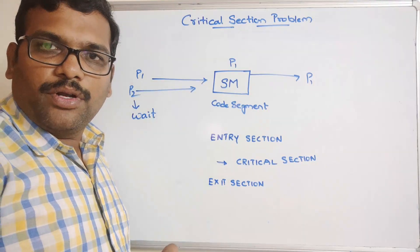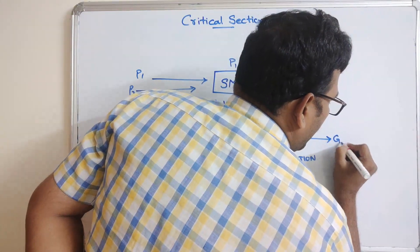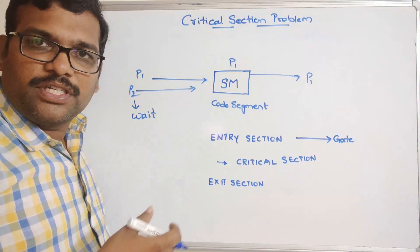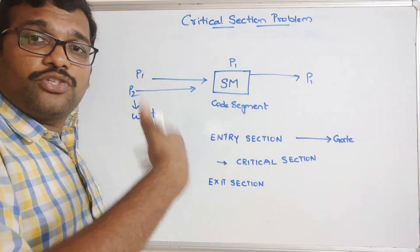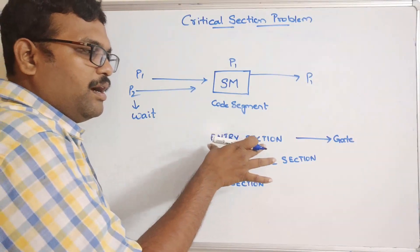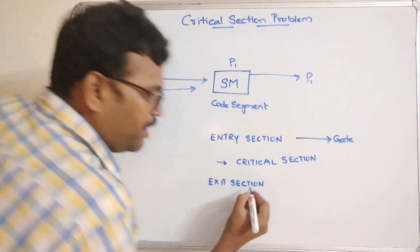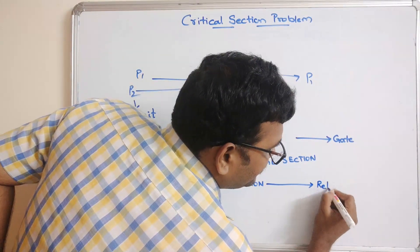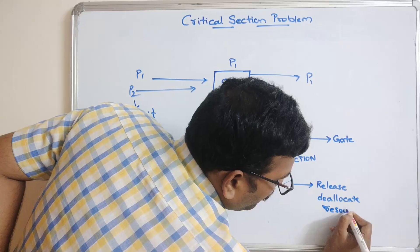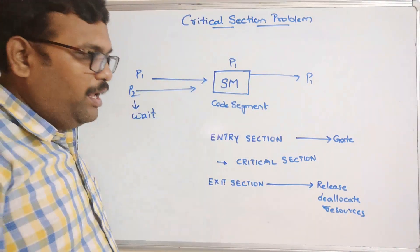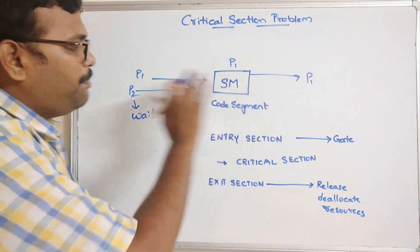The entry section acts as a gate to control entry into the critical section. If one process enters the critical section, the entry is stopped for any other process. Those other processes will be halted or made to wait by this entry section. Whenever a process completes its execution, the exit section will immediately release and deallocate all resources bound to that process, and only then will the entry section allow another process to enter the critical section.